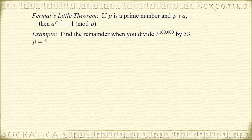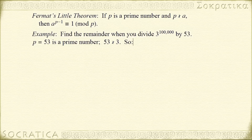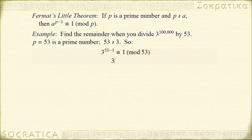Now, 53 is a prime number and 53 does not divide 3. So by Fermat's Little Theorem, we have 3 to the 53 minus 1 is congruent to 1 mod 53, or 3 to the 52nd power is congruent to 1 mod 53.